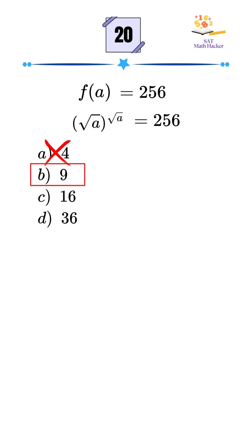Next, try a equals 9. Square root of 9 equals 3, so 3 to 3 equals 27. Still wrong.